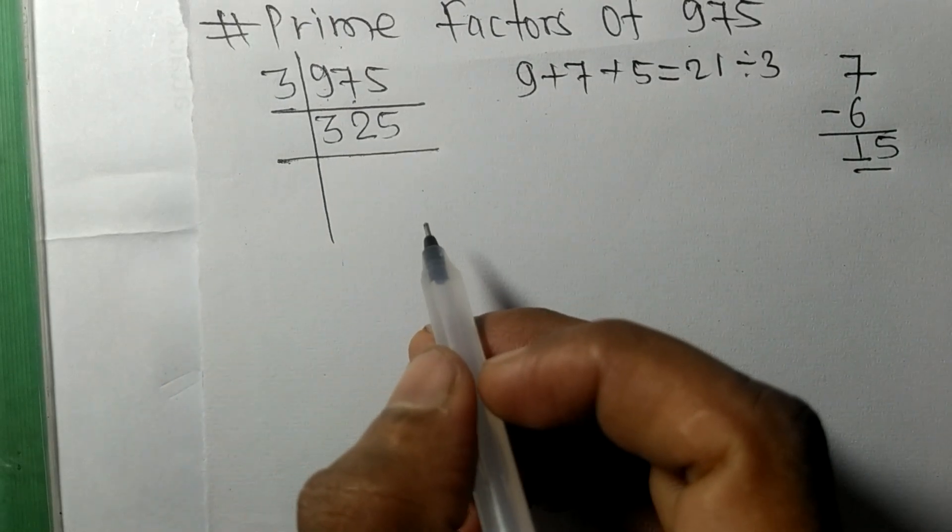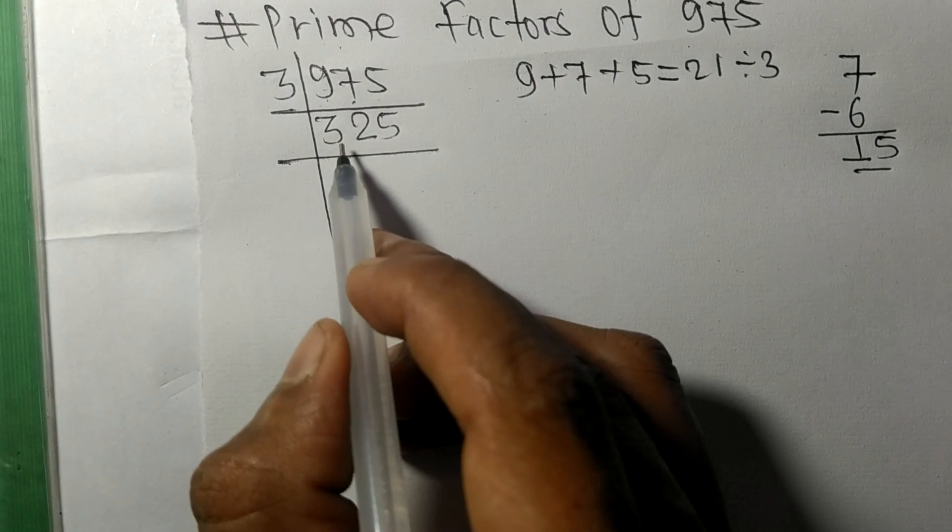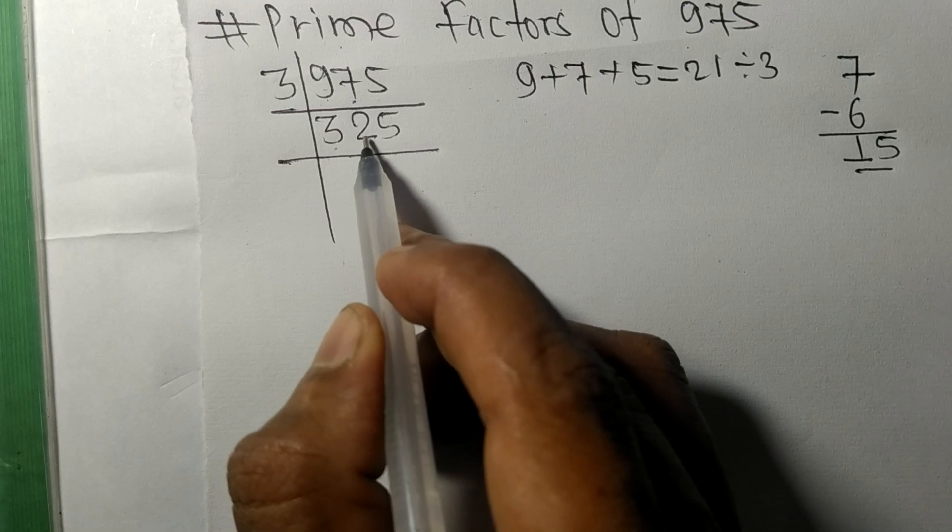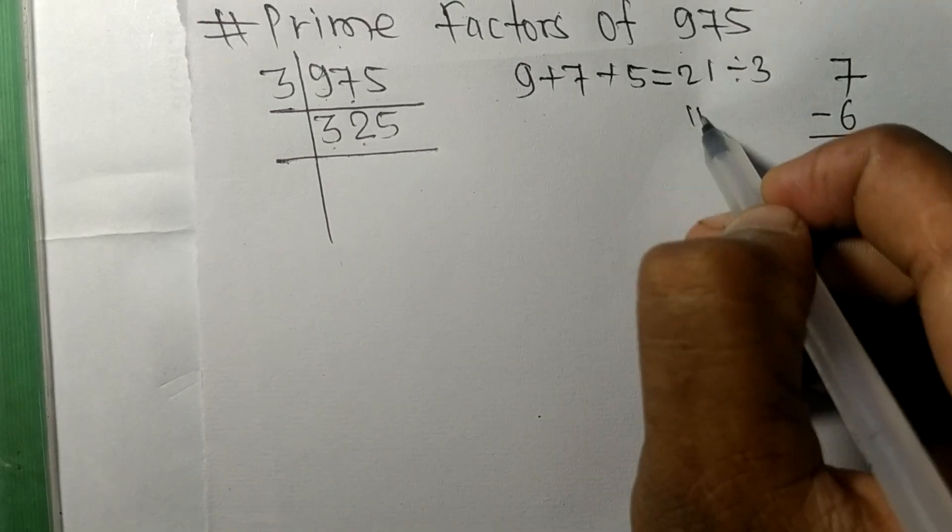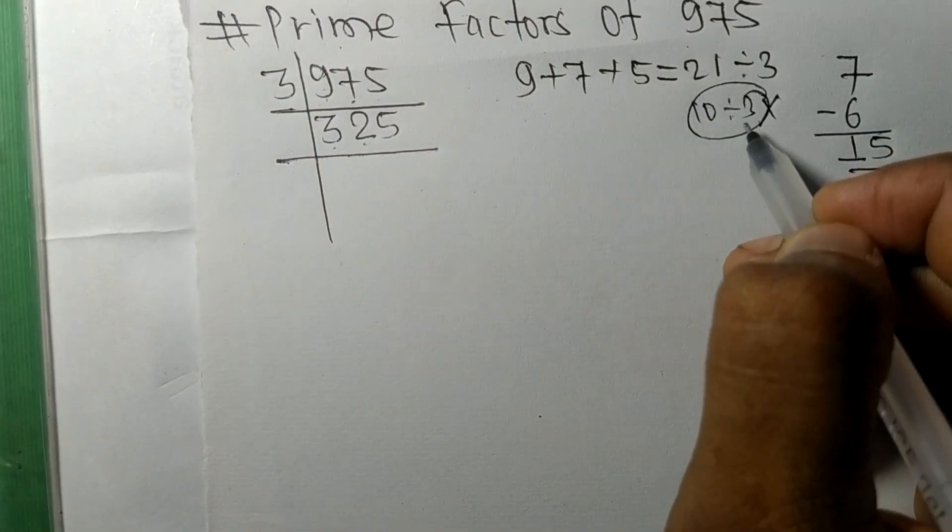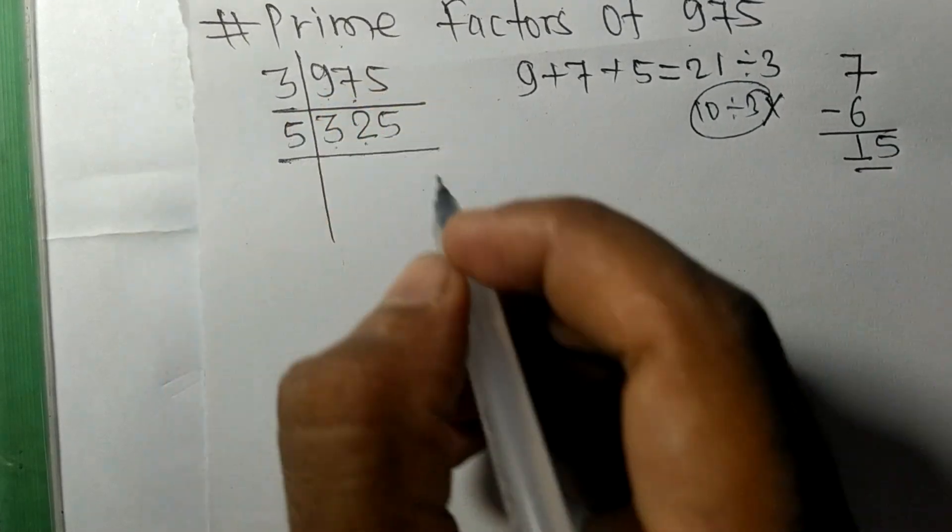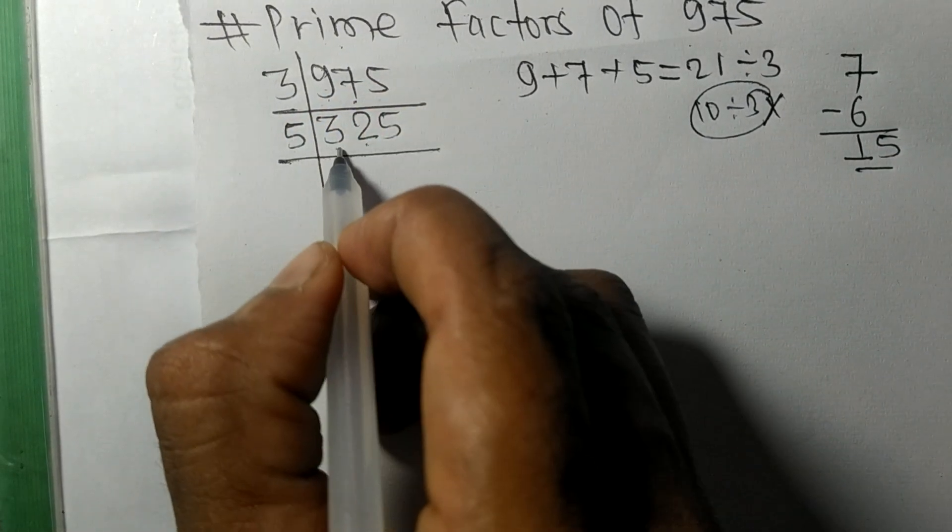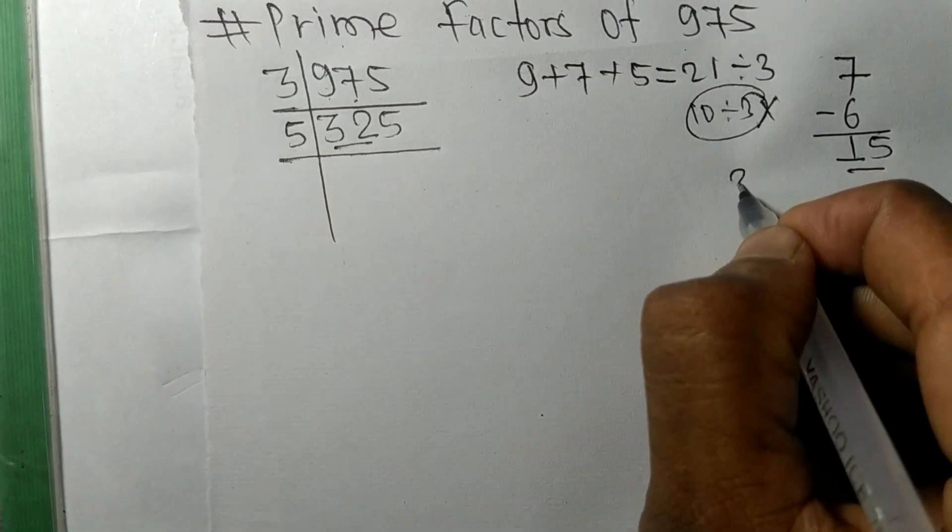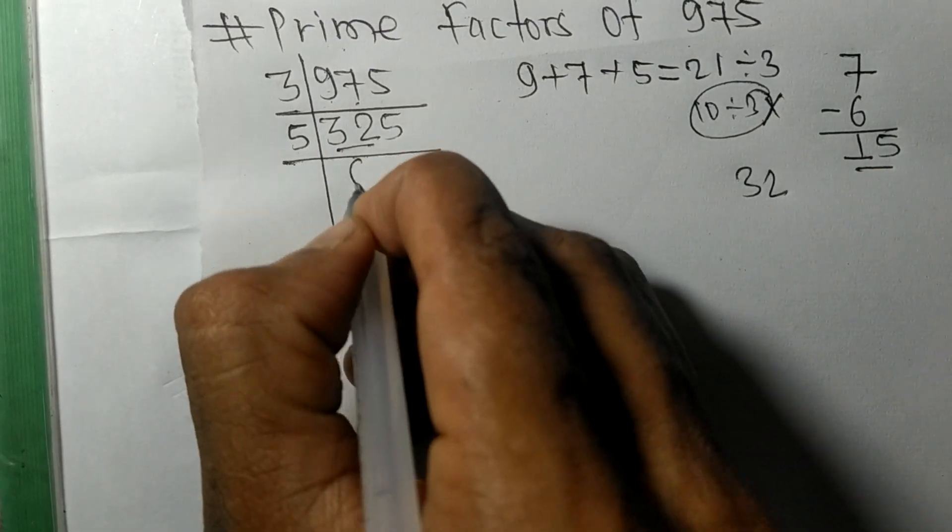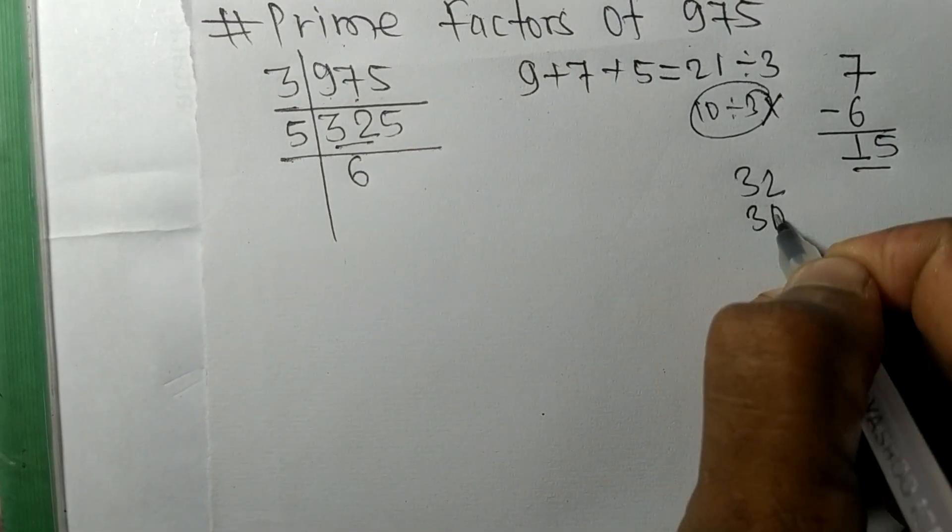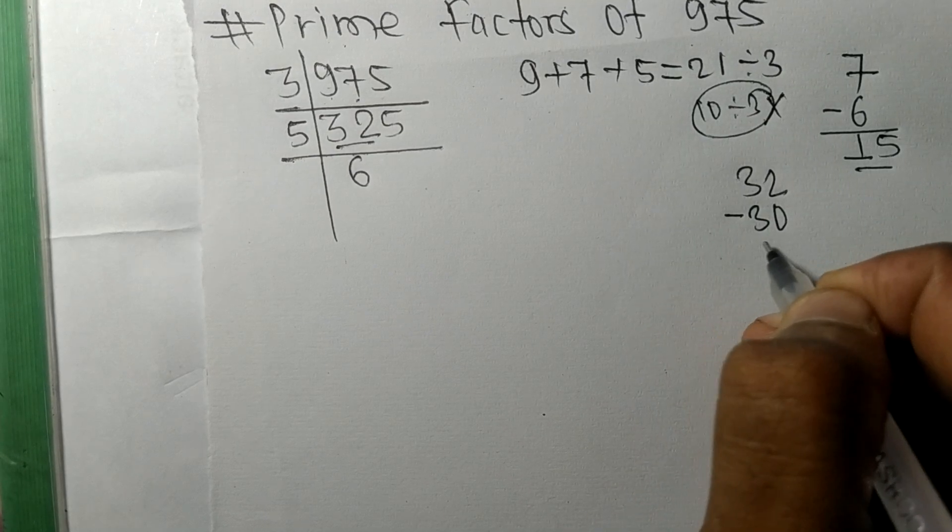Its sum is 3 plus 2 plus 5 equals 10. 10 is not exactly divisible by 3, so now it is divisible by 5. Here we have 32, so 5 times 6 equals 30. On subtracting we get 2. This 5 makes 25, so 5 times 5 equals 25.